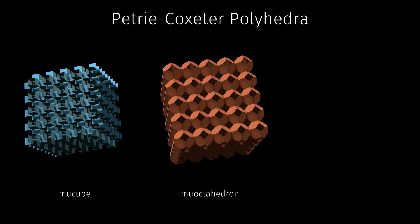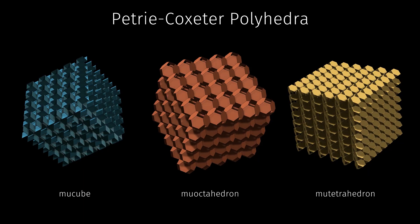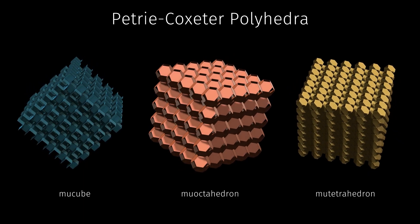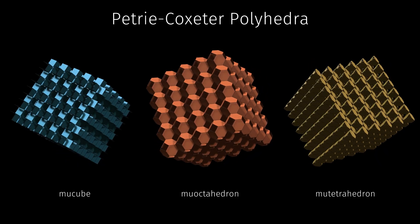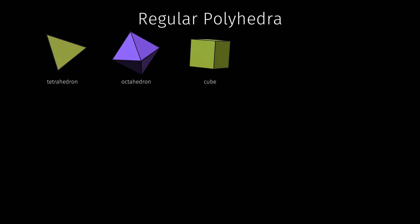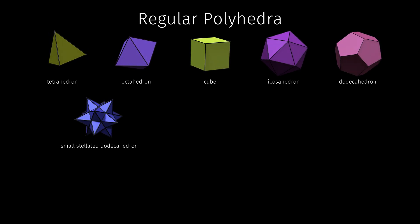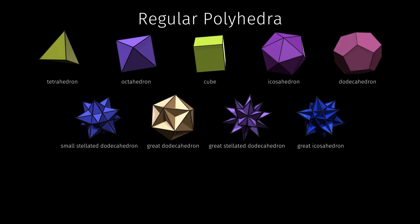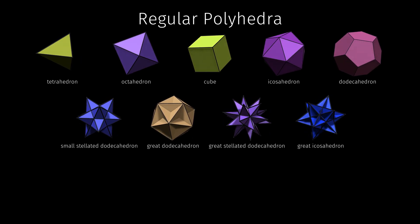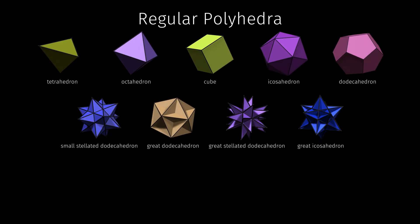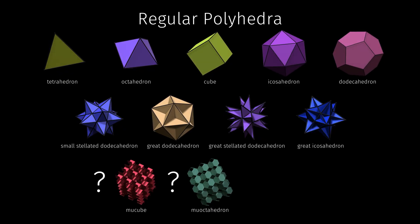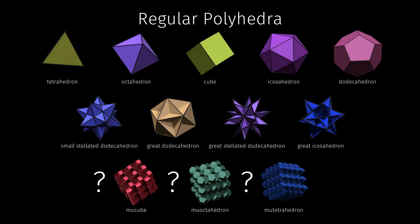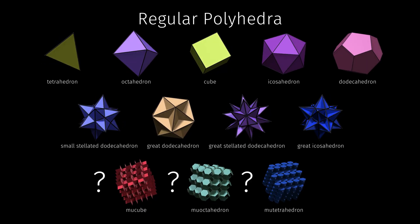The Petrie–Coxeter polyhedra are named after their discoverers, John Petrie and Donald Coxeter, who called them sponges. As infinite regular polyhedra with skew vertex figures, they belong to a larger family of regular skew polyhedra. They certainly meet the usual conditions — regular faces, identical edges, and identical vertices. The only question is whether infinite polyhedra should be allowed at all. Normally only the nine classical polyhedra are considered regular, but if you do include the Petrie–Coxeter polyhedra, it's the first step into a larger, stranger world of many more regular shapes.